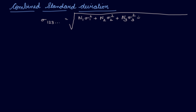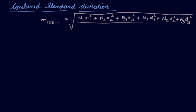Now, if there are 3 series, you also add the terms: n1 into d1 squared, plus n2 into d2 squared, plus n3 into d3 squared — all divided by the total number of observations across all series.